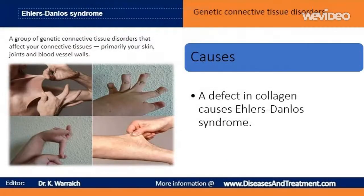A defect in collagen causes Ehlers-Danlos syndrome. Collagen is a protein that adds flexibility and strength to connective tissue. People with the disorder have a faulty gene that leads to weak collagen or not enough normal collagen in their tissues. These defects can harm the connective tissue's ability to support muscles, organs, and other tissues.